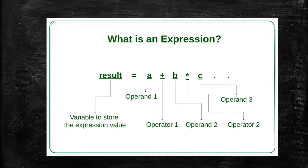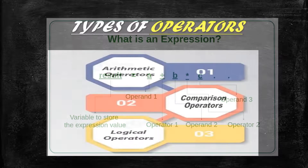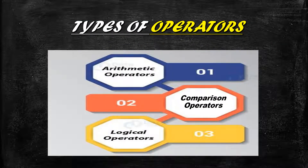An expression is a formula. For example: result = (a + b) * c, where a, b, and c are the operands, plus and multiplication are the operators, and result is a variable that stores the value yielded by the expression.